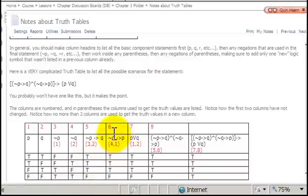Now, on to column 6. Not q implies p. Similar situation. We're going to be comparing the not q column, which is column 4, with the p column, which is column 1.